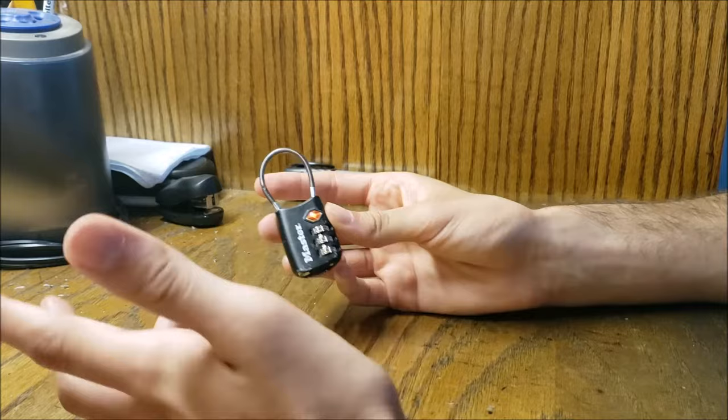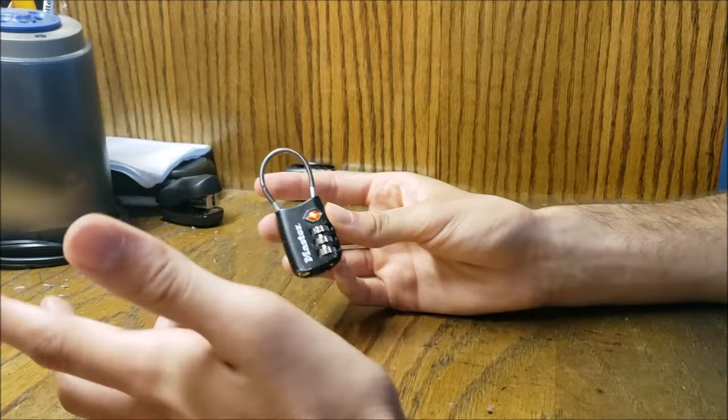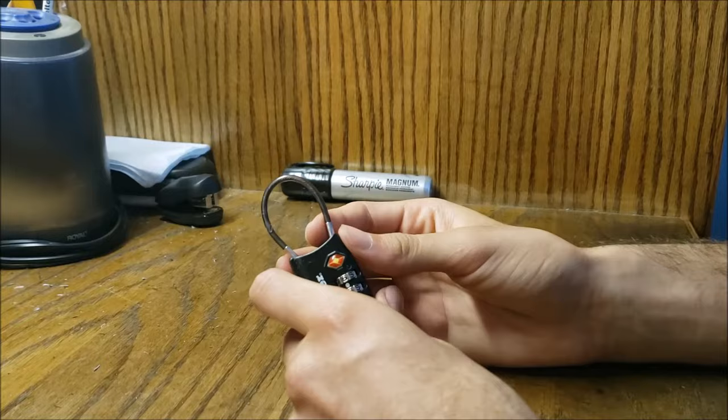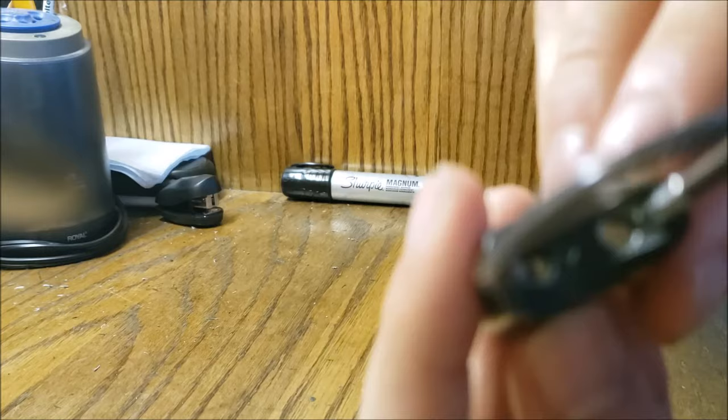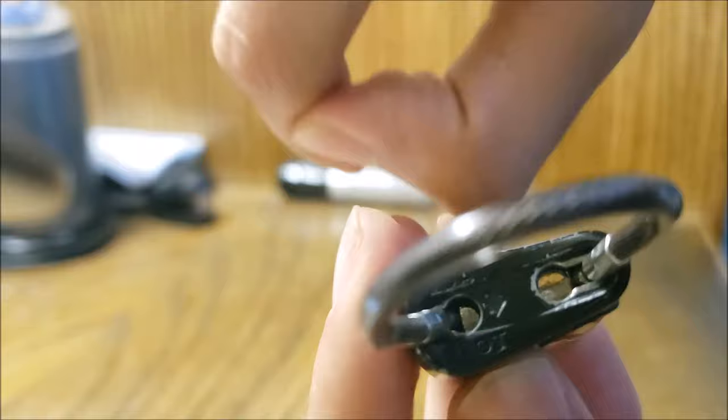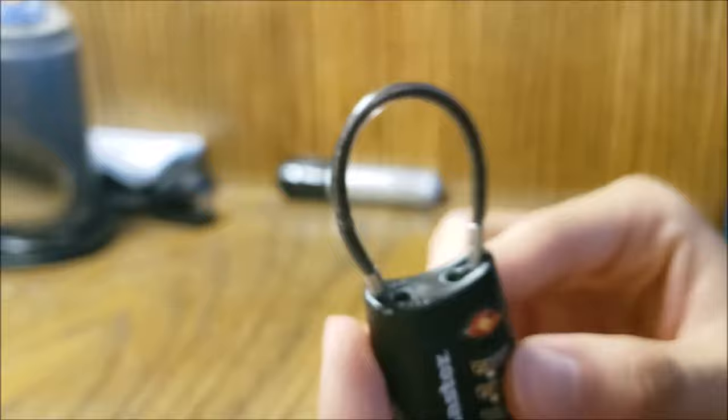If you have a different type of lock, you can still follow along and hopefully it'll work. If you're using this lock, the way that you apply tension is by grabbing here and pushing inward, because the way that you take it out is that you push inward and then up. If you see in here, this little thing will go down and will allow this thing to be free. I'll show you when we unlock it.